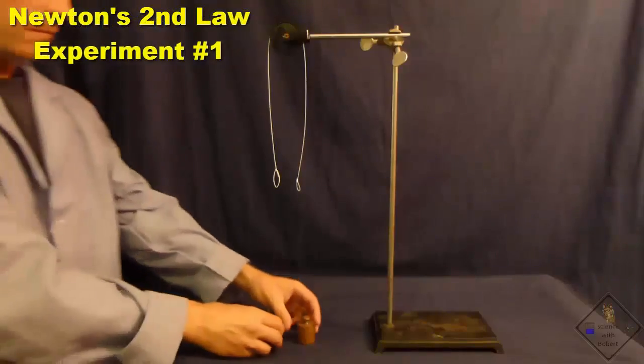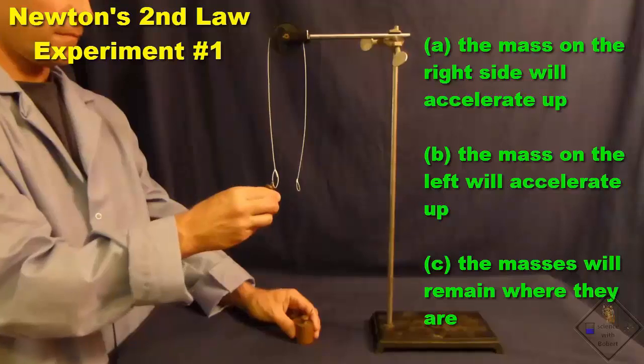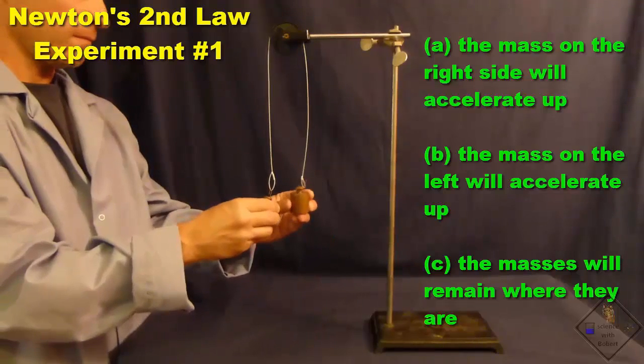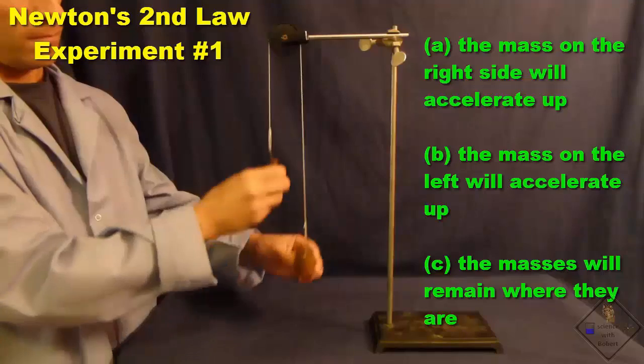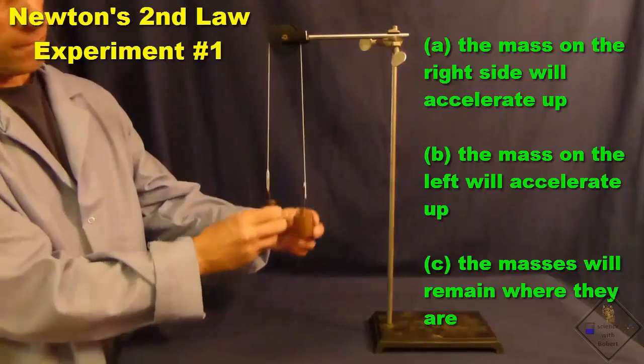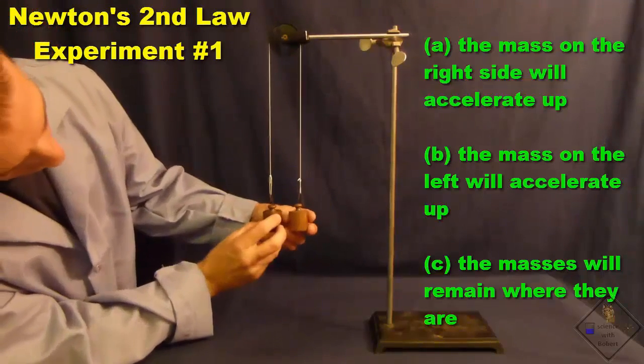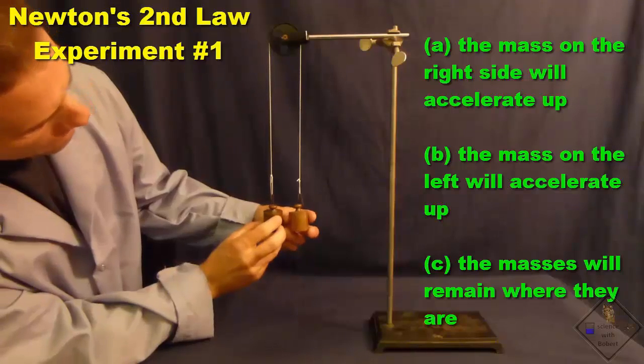Here are two objects of exactly the same mass. Dr. Smith is going to attach each mass to opposite strings hung over a pulley. When Dr. Smith lets go of the masses, what do you predict will happen?